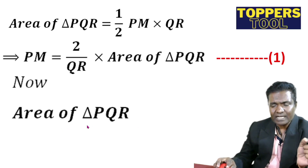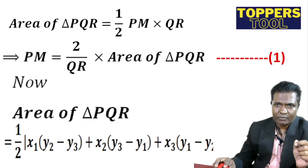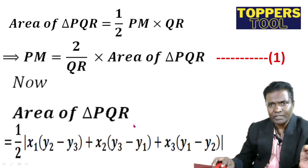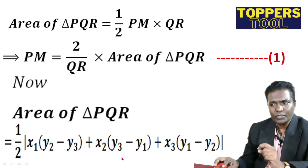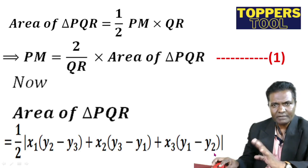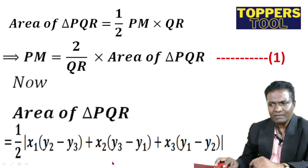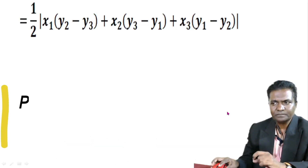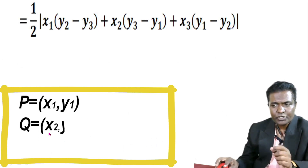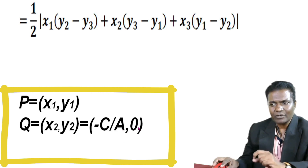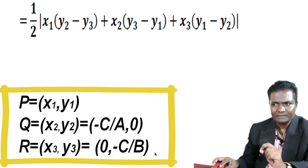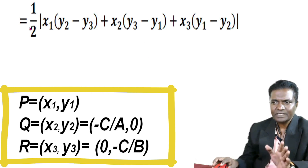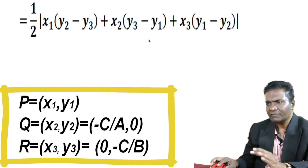To find the area of triangle using coordinates of P, Q, R: area of triangle PQR equals half times the absolute value of x1(y2 minus y3) plus x2(y3 minus y1) plus x3(y1 minus y2). Now substitute: P is (x1, y1), Q is (minus c by a, 0), and R is (0, minus c by b).